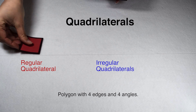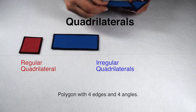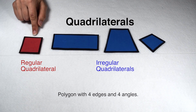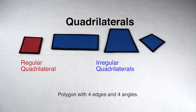When we increase to a four-sided figure, we've created quadrilaterals. The square is our regular quadrilateral because of its equal sides and equal angles. All other quadrilaterals would be classified as irregular because they either have different side lengths, different angle measures, or both.